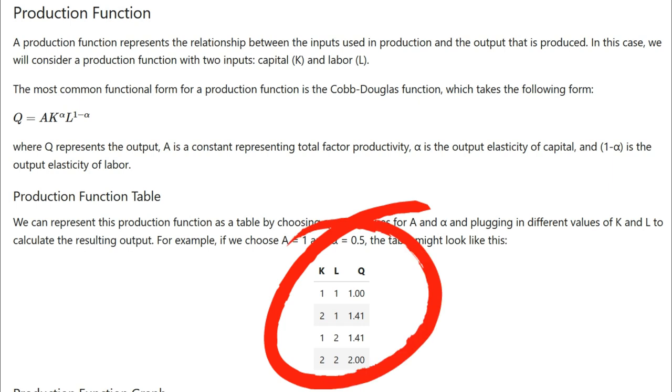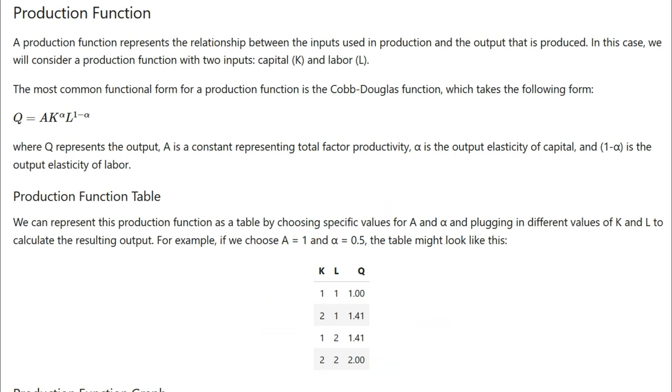Let's take a look at the first row of the table as an example. The values for K and L are both 1, which means we are using one unit of capital and one unit of labor. Plugging these values into the Cobb-Douglas function, we get Q equals A times K to the power of alpha times L to the power of 1 minus alpha, and when you substitute the values, you get an answer of 1, a Q value of 1. So when we use one unit of capital and one unit of labor, we can produce an output of 1.